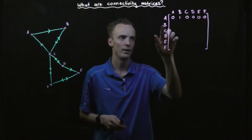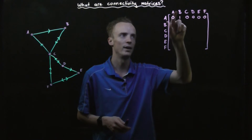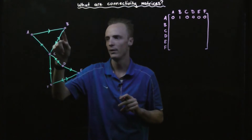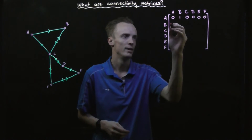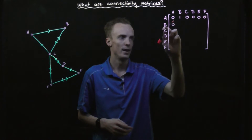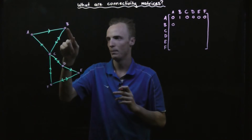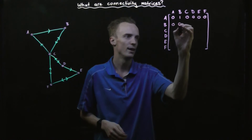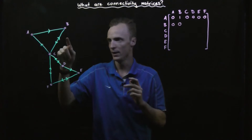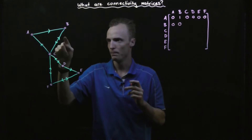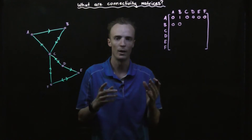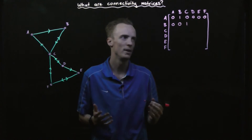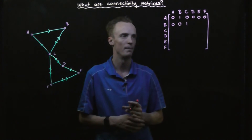Now we look at if we start at B: is there any one-step pathway to get to node A? Starting here, I can't travel along that way and there's no other one-step pathway, so that would be a zero. If I started at B, is there a one-step pathway back to B? It would take another step to get back, so there's none. If I start at B and move to C, I can get there this way, but there's no other way within one step — so there's only one pathway.